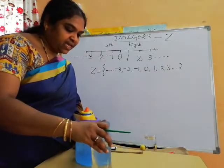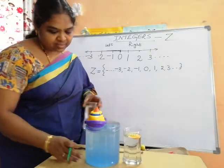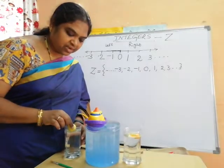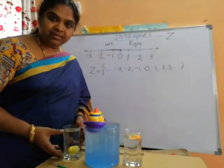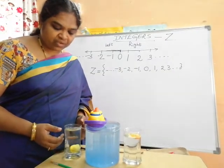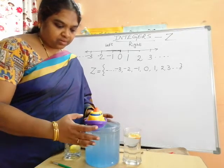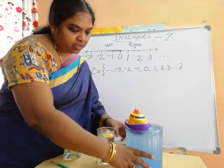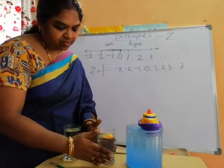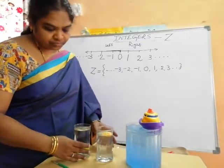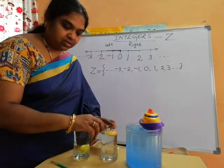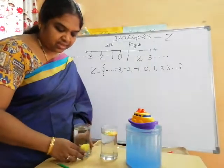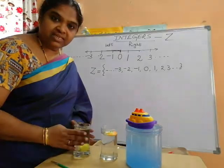If you observe the chain: the fish is on the water — that is zero level; the boat is above the sea level — positive values; and the lemon which is beneath the water — these are negative values.